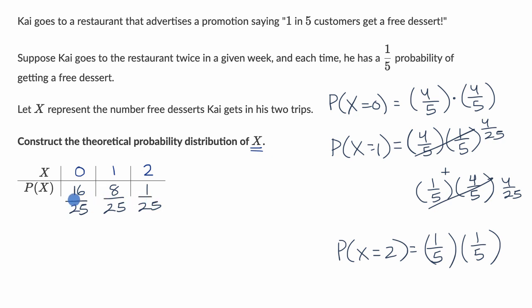And you can do a reality check here. These all need to add up to one, and they do indeed add up to one. 16 plus 8 plus 1 is 25. So 25/25ths is what they all add up to. And we're done.